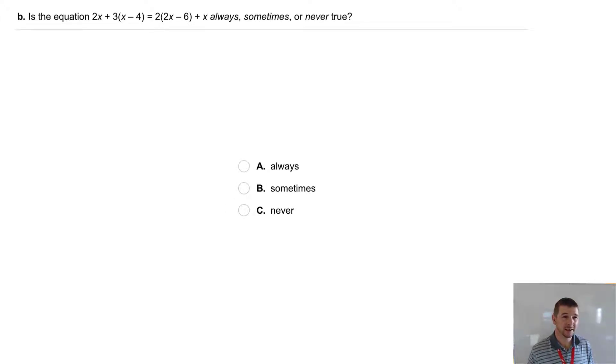Part B. How about the equation 2x plus 3 times the quantity x minus 4 equals 2 times the quantity 2x minus 6 plus x? Is that always, sometimes, or never true?